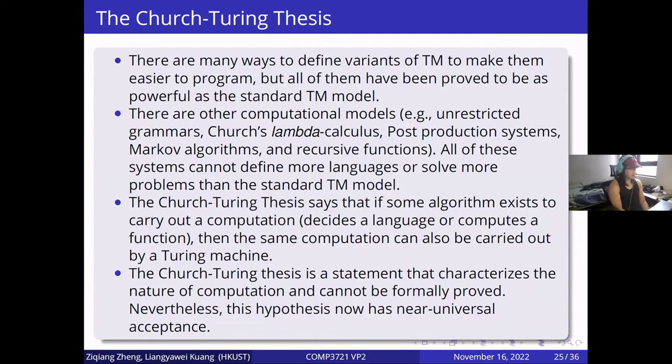As there are many ways to define variants of a Turing machine, but all of them have been proven as powerful as the standard Turing machine model. There are other computational models. All of these systems cannot define more languages or solve more problems than the standard Turing machine model. The Church-Turing thesis says that if some algorithm exists to carry out a computation, then the same computation can also be carried out by a Turing machine.